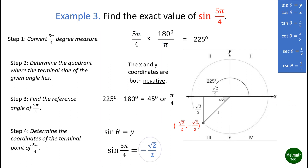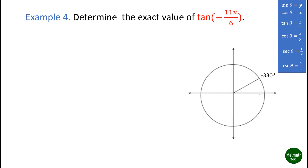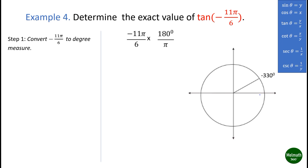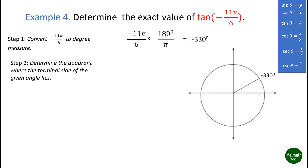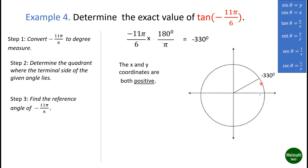Example four: determine the exact value of tangent(-11π/6). Convert -11π/6 to degree measure: -11π/6 × (180°/π) = -330 degrees. Determine the quadrant where the terminal side lies. Observe that -330 degrees, or -11π/6, is located in quadrant one; therefore the x and y coordinates are both positive.